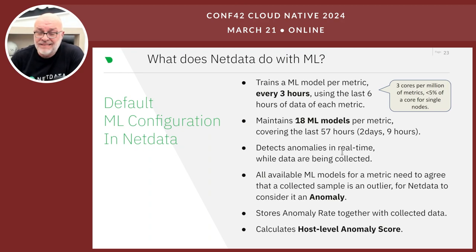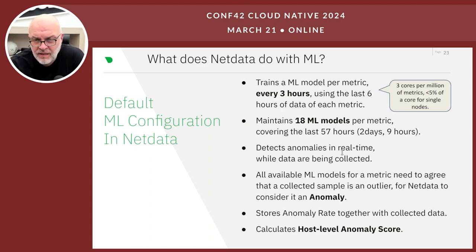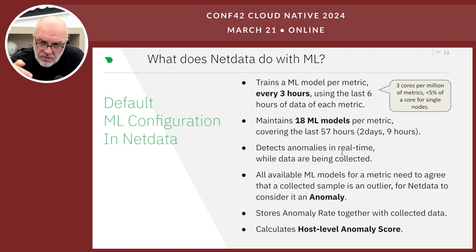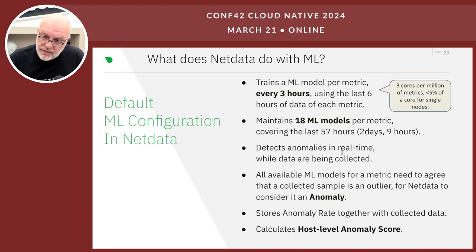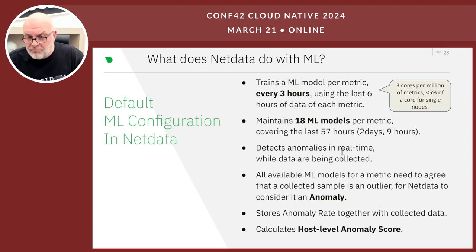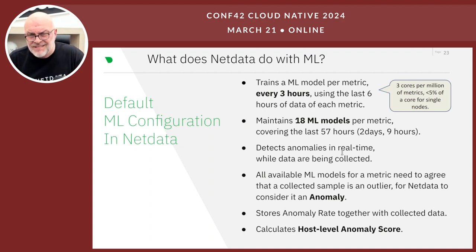NetData trains 18 machine learning models for each metric. On a default NetData you may have 3,000 to 4,000 metrics on a server — for each of those metrics it will train 18 machine learning models over time. These models generate anomaly information that is stored together with the samples. Every sample on disk has a bit indicating whether it was anomalous or not. The query engine can then calculate the anomaly rate as a percentage — the number of anomalous samples versus the total number of samples for a given timeframe.